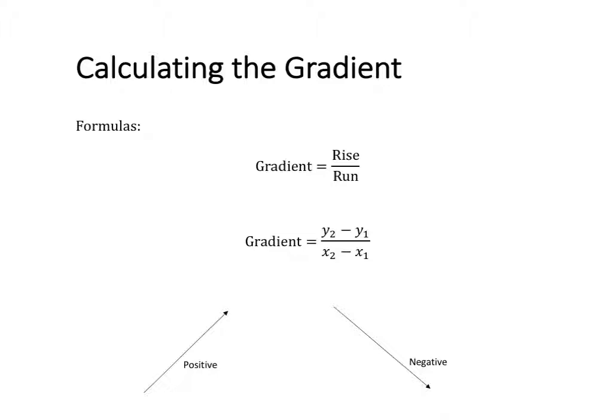The first formula, rise over run, we can use when you're calculating the gradient off of a graph. The second formula, where we have our two lots of points, we can use when we're calculating the gradient of a graph from a table of values, or just from two sets of points provided to us.